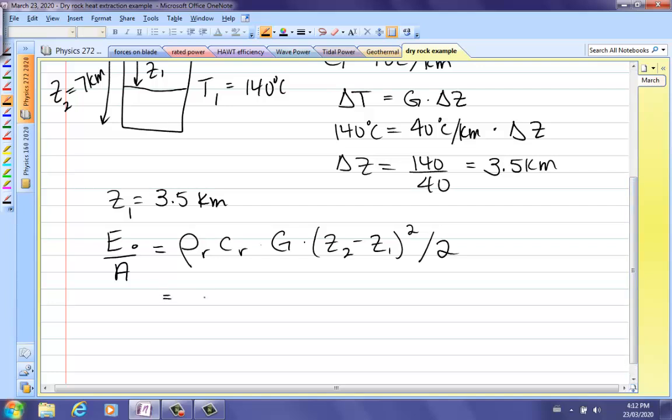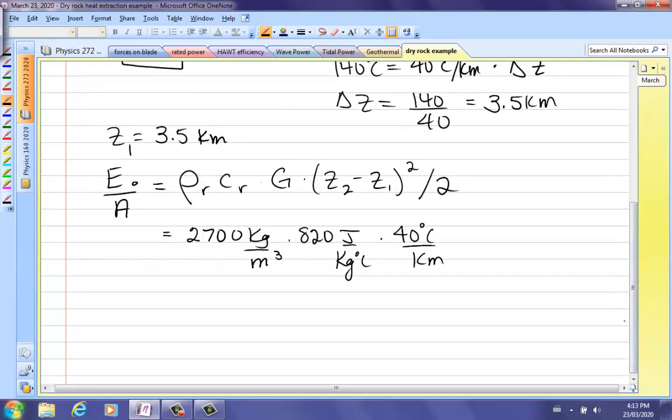If we put those numbers in, now you should definitely go through and check these units. 2,700 kilograms per meter cubed. Specific heat capacity, 820 joules per kilogram degree Celsius. Temperature gradient, 40 degrees Celsius per kilometer. You're going to have to convert that to meters. And then, I'm just going to use kilometers. 7 minus 3.5 squared.